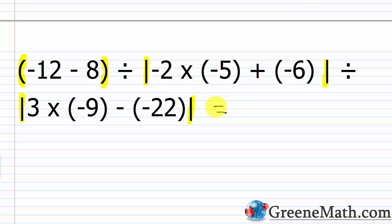I'm going to start out and just work with negative 12 minus 8 first, though it really doesn't matter. Inside these absolute value bars, and then the other, as long as I do everything separately before I do the division, I'm okay. Negative 12 minus 8 is the same thing as negative 12 plus negative 8. That's negative 20.